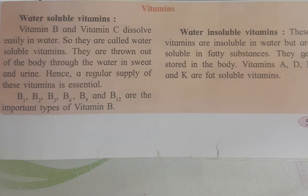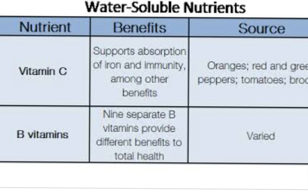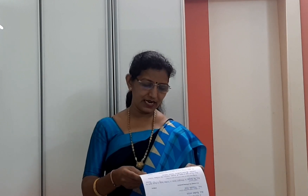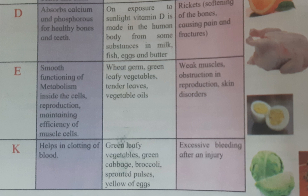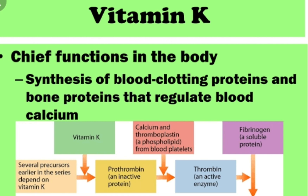First: Vitamin B and C are water insoluble. Are they? No, wrong. Vitamin B and C are water soluble vitamins because they dissolve in water very easily. Second: Vitamin D helps in clotting of blood. Is it correct? No, it is wrong. Because Vitamin K is the vitamin that helps in clotting of blood.